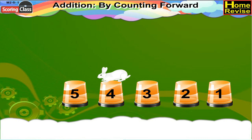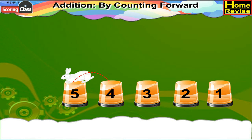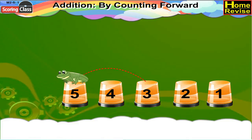The rabbit is standing on step 4. If we take 1 more step further, the rabbit will be at step 5. Here in this case, the frog is standing on step 3. If it takes 2 steps, it will be on step 5.